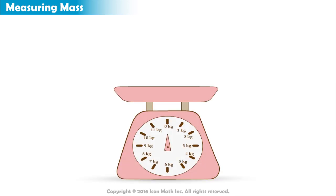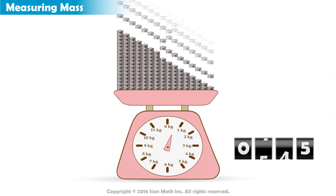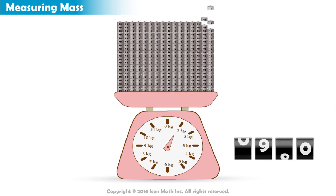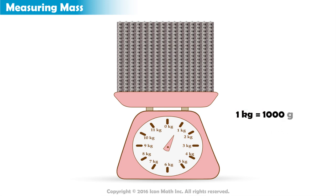Let's use this balance to see how many grams we need until the arrow points to one kilogram. So we put more and more grams on the balance. Wow! So we need 1,000 grams to get to one kilogram. So one kilogram is equal to 1,000 grams.